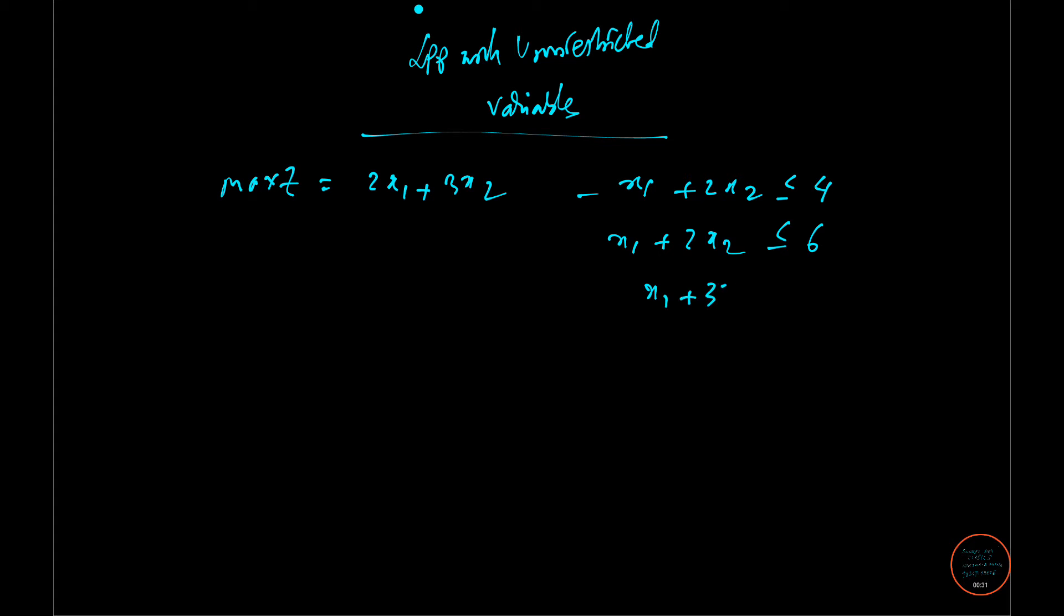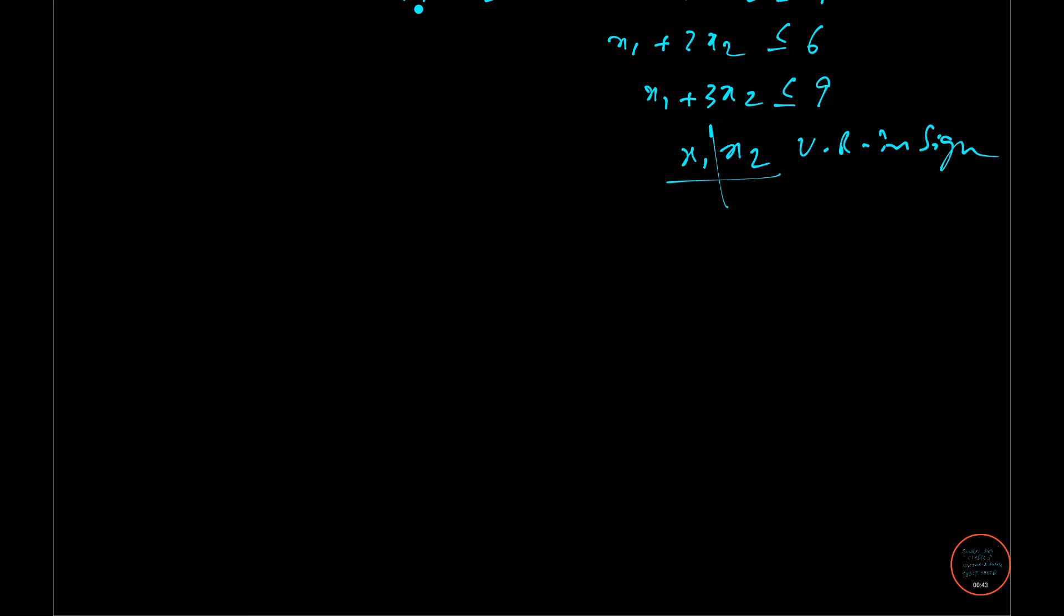x1 plus 3x2 less than equal to 9, and maybe x1 and x2 are both unrestricted in sign. So how to proceed in this case? Here we are going to represent x1 as x1 dash and x1 double dash, and x2 will be x2 dash and x2 double dash.